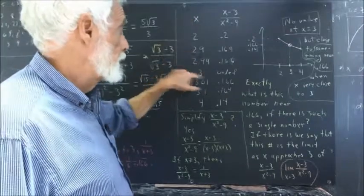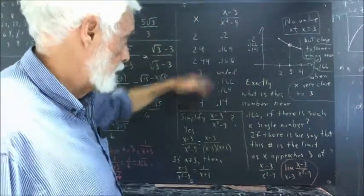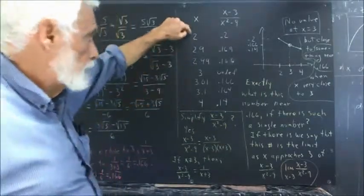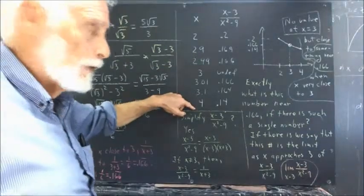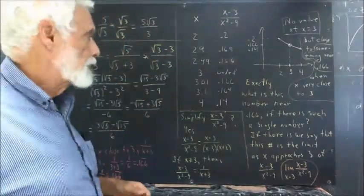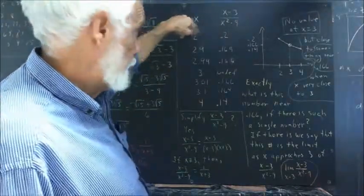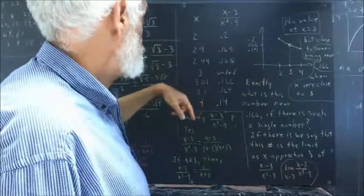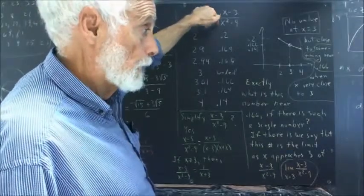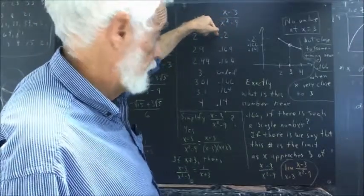So when x equals 3, this expression is undefined. You see what I have here is a table of selected values of x. I start at the value 2 and go to the value 4, with the value 3 in between. When x equals 2, it's easy to verify that we get 0.2, because 2 minus 3 is negative 1, 2 squared is 4, 4 minus 9 is negative 5. Negative 1 over negative 5 is 1 fifth, which is 0.2.